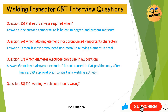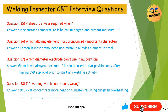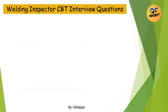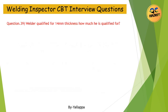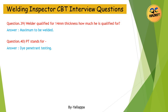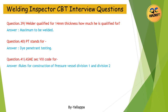Question 38: TIG welding — which condition is wrong? Answer: DCEP, because it concentrates more heat on the tungsten, resulting in tungsten overheating and possible tungsten inclusion in the weld pool. Question 39: A welder qualified for 14 mm thickness — how much is he qualified for? Answer: Maximum thickness to be welded.